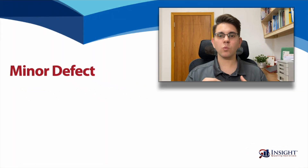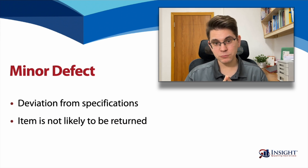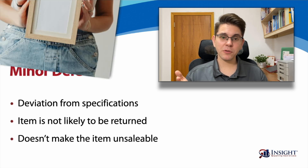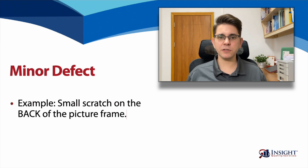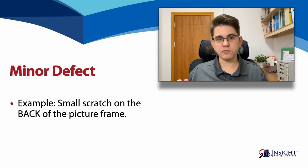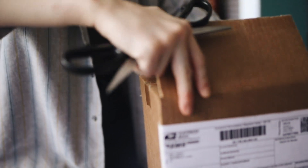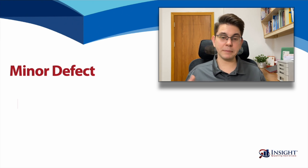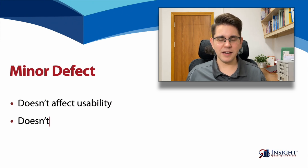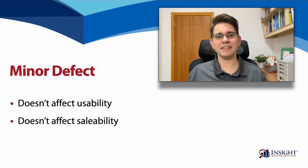A minor defect is one that is a deviation from your specifications, but it's one that does not make the item likely to be returned, and it doesn't make the item unsaleable. For example, if your item is a wooden picture frame and one of the frames has a small scratch on the back, a consumer in a retail store is not going to put it aside because of that. If you receive it as an Amazon delivery, you're not going to return it for a small scratch on the back. That small scratch doesn't affect the usability or the salability of the item. It's not ideal, but it is a minor defect.